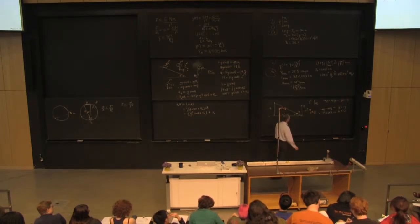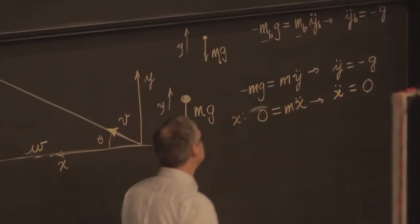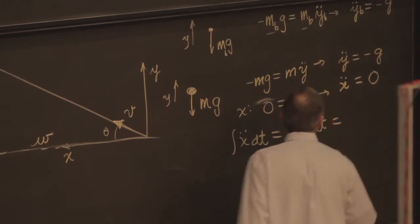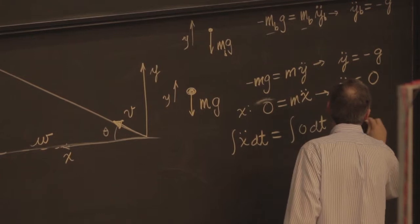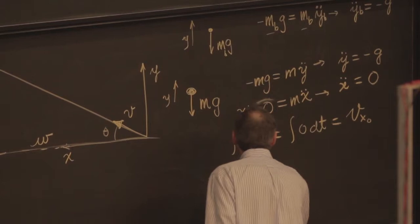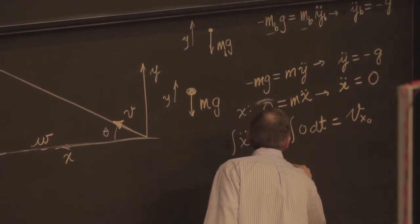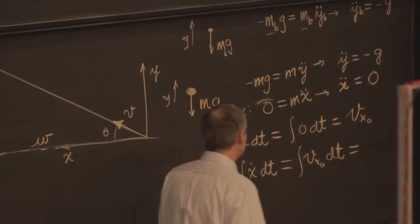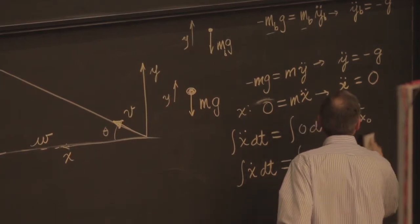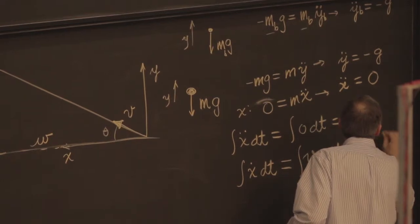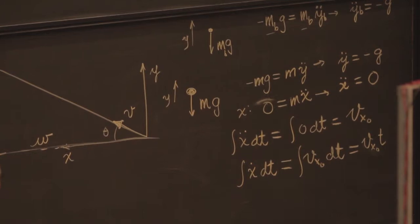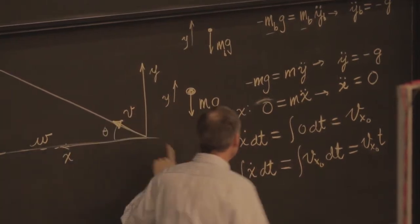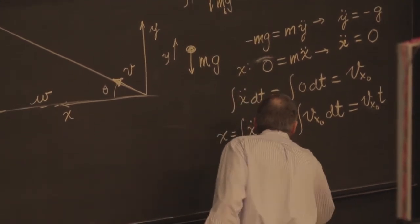So I have x double dot is 0. That means the acceleration in the x is 0. I integrate. And that's just some constant, which is the initial x velocity. So let me call that v x0. I can integrate again. And the integral of the velocity gives me the position. So I get v x0 t plus whatever initial position it had. Well, I'm going to measure my x position from this point. So initial position at time 0 is 0. So I think that gives me the position x for the tennis ball.